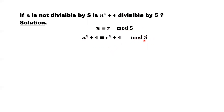So here, if a number is divided by 5, how many possible remainders are there? 0, 1, 2, 3, 4 — 5 possible remainders. So here if N is not divisible by 5, that means the remainder cannot be 0. If it is 0, that means divisible by 5. So we only need to check r equals 1, 2, 3, 4.